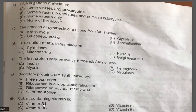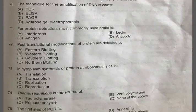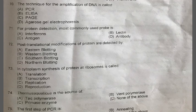Question 69: Cobalt-containing vitamin is — vitamin B1, B2, B6, or vitamin B12? The correct one is D, vitamin B12. Question 70: The technique for amplification of DNA is called — A: PCR, B: ELISA, C: BHD, D: Agarose gel electrophoresis. The correct option is A, PCR, which stands for Polymerase Chain Reaction.